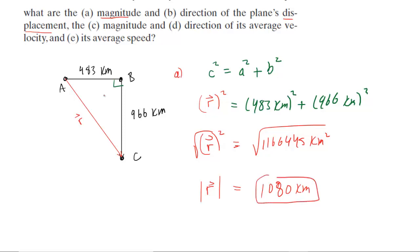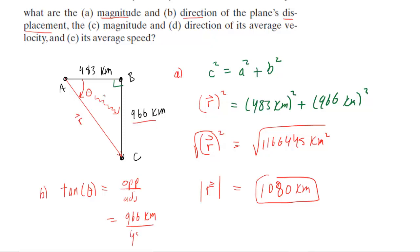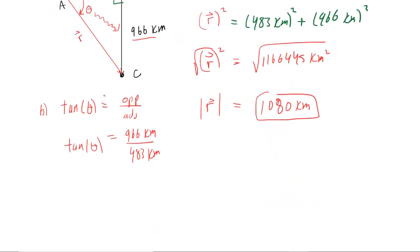In part B, we need the direction of the plane's displacement. That direction is indicated by the angle theta. From the right triangle, the tangent of that angle equals the opposite side divided by the adjacent side. The side opposite that angle is 966 kilometers, divided by the adjacent side of 483 kilometers. When you divide those, you get exactly 2, so the tangent of the angle equals 2.